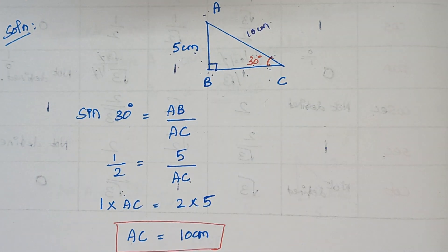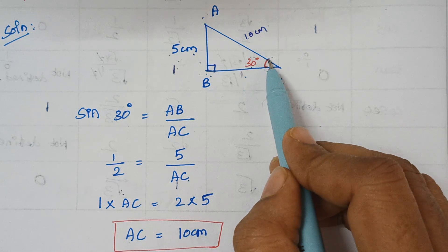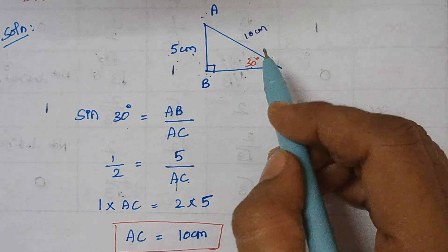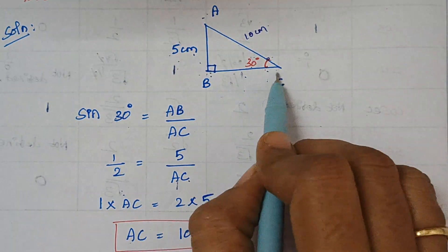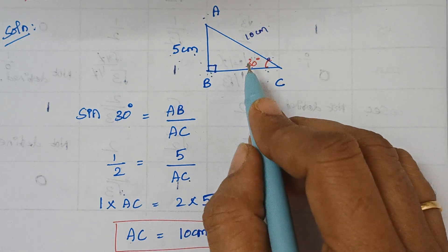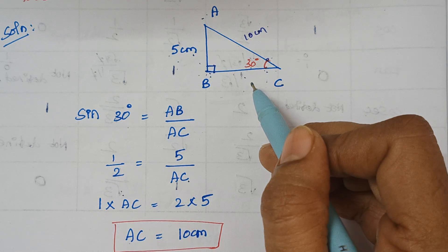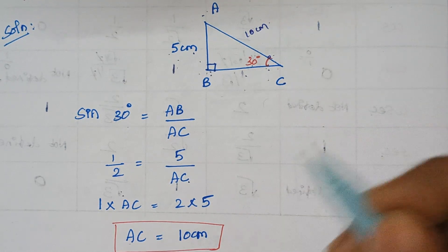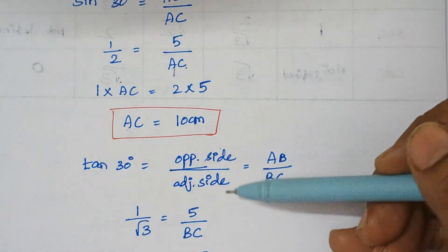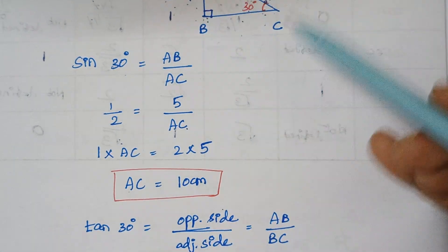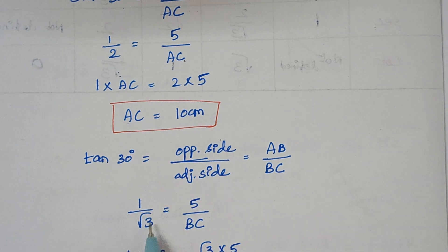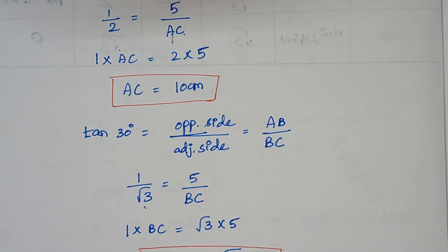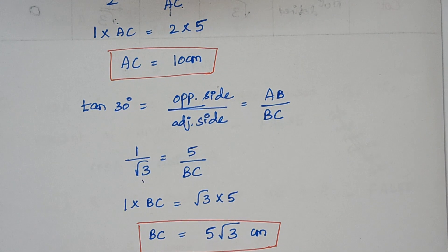Now we find BC. For angle 30°, BC is the adjacent side. We can use cos 30 or tan 30. Using tan 30, which is opposite over adjacent: tan 30 = 5 over BC. The value of tan 30 is 1/√3. Cross multiplying, we get BC = 5√3.